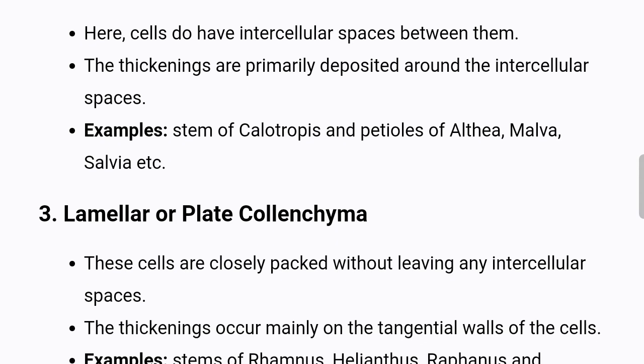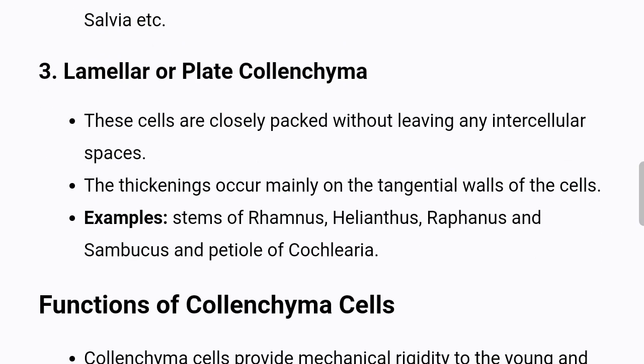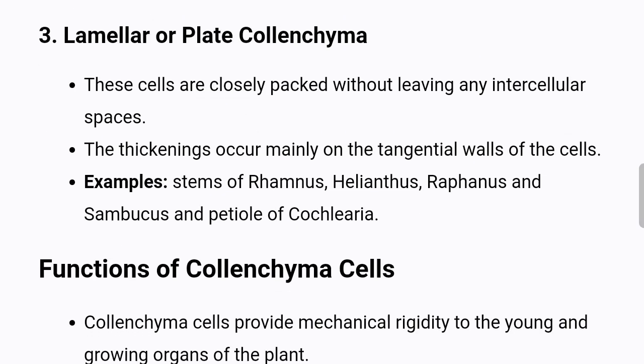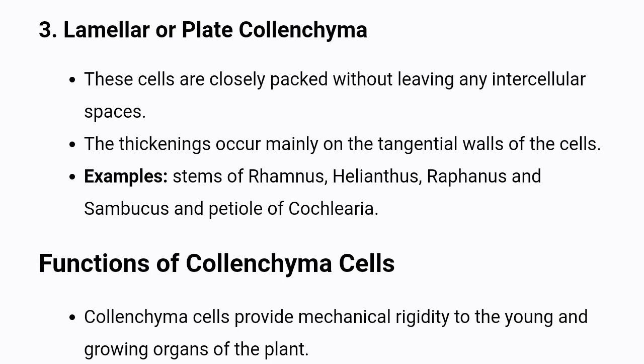3. Lamellar or plate collenchyma — these cells are closely packed, without leaving any intercellular spaces. The thickenings occur mainly on the tangential walls of the cells. Examples: stems of Rhamnus, Helianthus, Raphanus, and Sambucus, and petiole of Cochlearia.